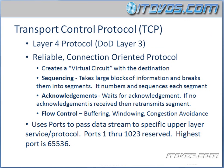The Transport Control Protocol, also known as TCP, is a Layer 4 protocol on the OSI model, which is the transport layer. And on the DOD model, it's on Layer 3, which is the host-to-host layer. TCP is a reliable, connection-oriented protocol, whereas UDP, which is the other main Layer 4 protocol, is not reliable. That's the important difference between TCP and UDP.